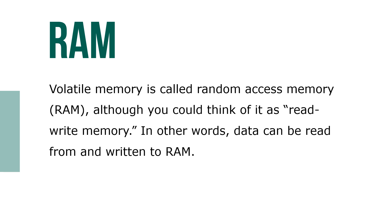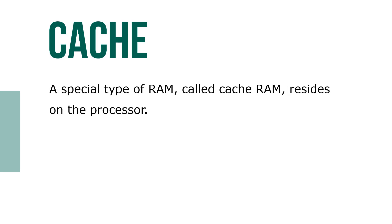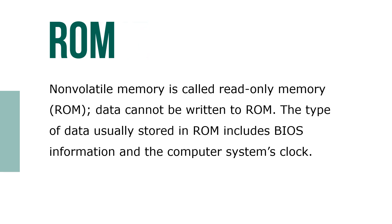In other words, data can be read and written to RAM. A special type of RAM, also called cache RAM, resides in the processor. Non-volatile memory is called read-only memory, or ROM. Data cannot be written to ROM.